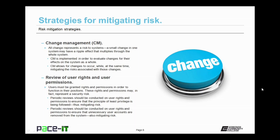Now let's talk about strategies for mitigating risk. First up is change management. All change represents a risk to systems. A small change in one system may have a ripple effect that multiplies through the whole system. Change management is implemented in order to evaluate changes for their effects on the system as a whole, which can bring to light some hidden risks associated with a change. Change management allows for changes to occur while at the same time mitigating the risks associated with those changes.